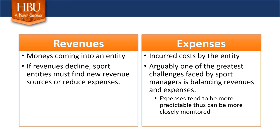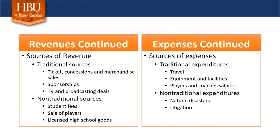This list is not all-encompassing, but it gives us some ideas of typical sources of revenue and expenses across sport. Traditional sources of revenue include tickets, concessions, and merchandise. Especially in professional sport, we see sponsorships and TV and broadcasting deals, and we'll also see those in collegiate sport.